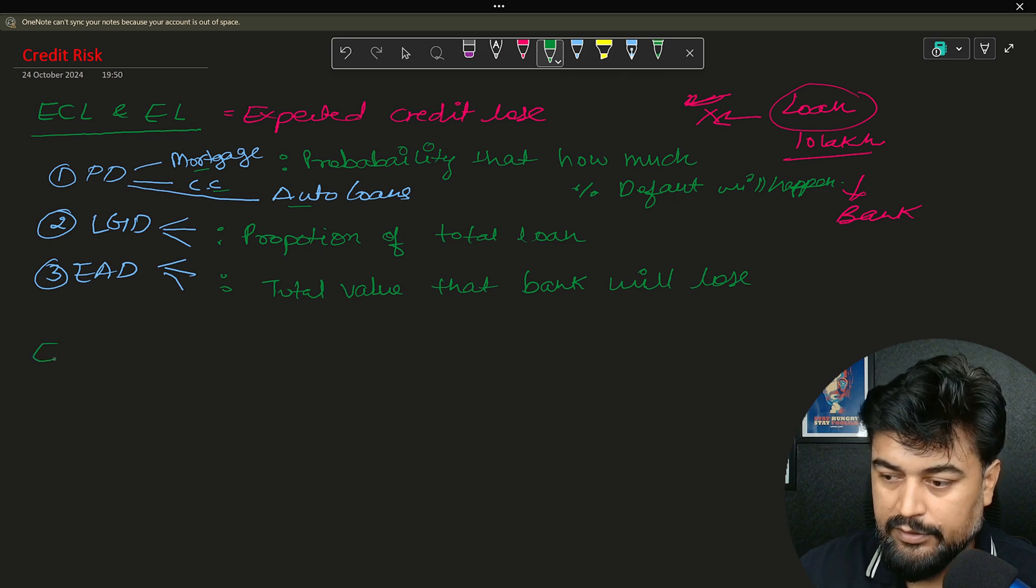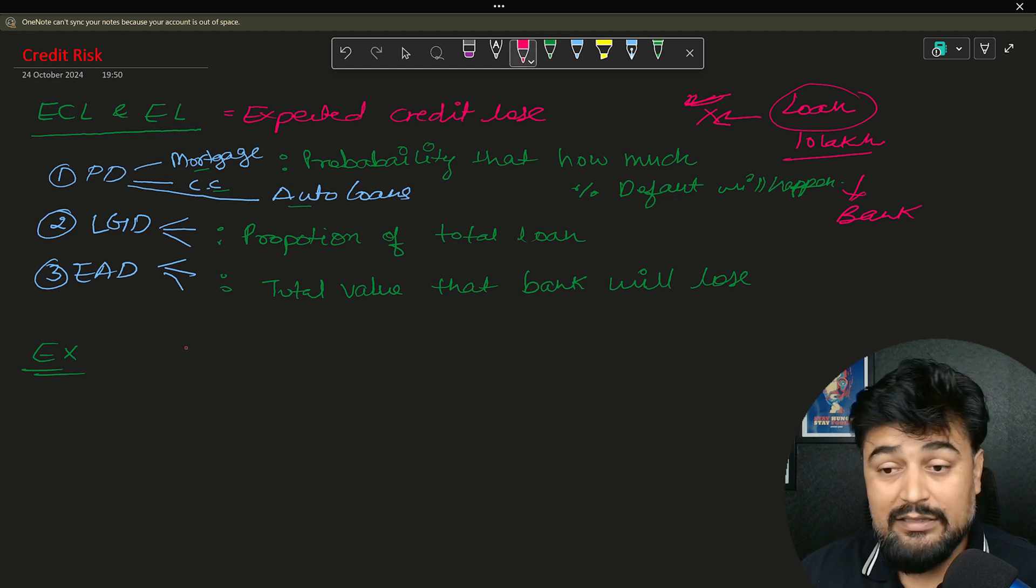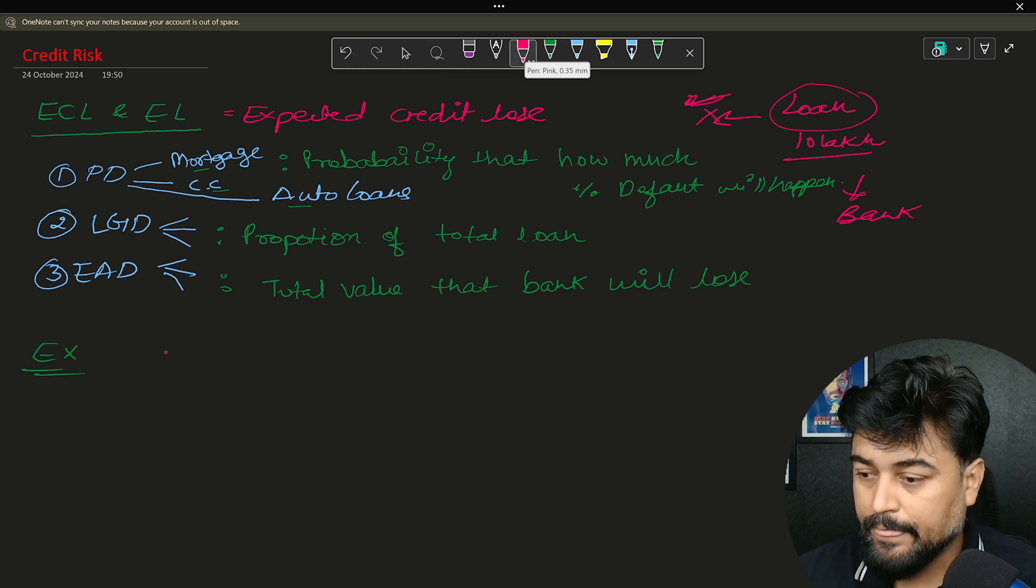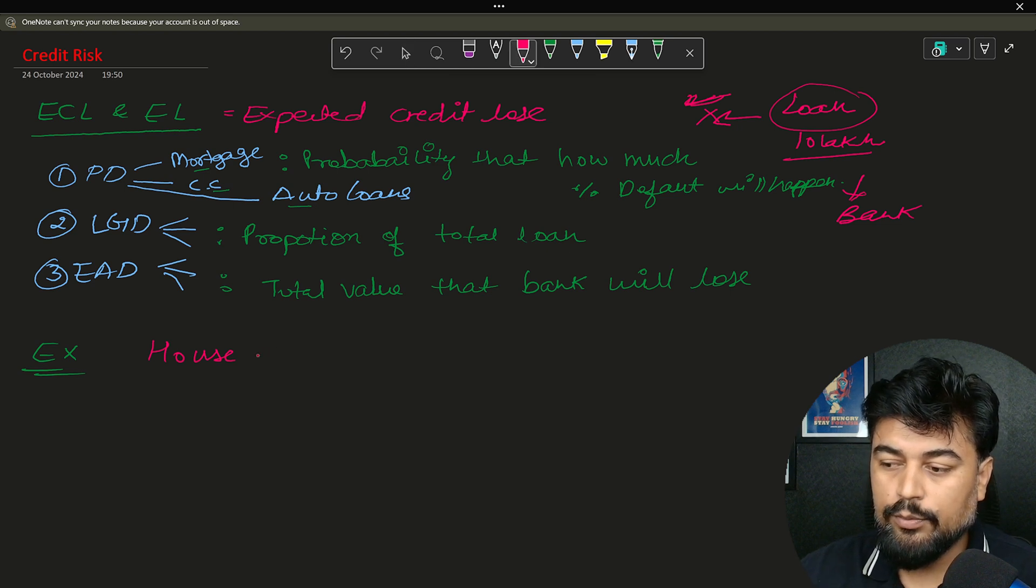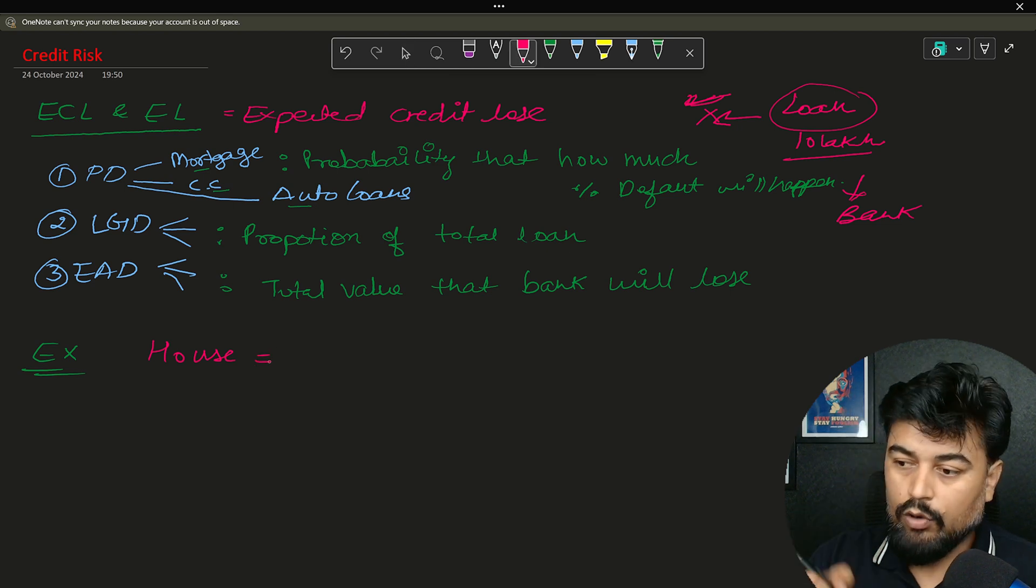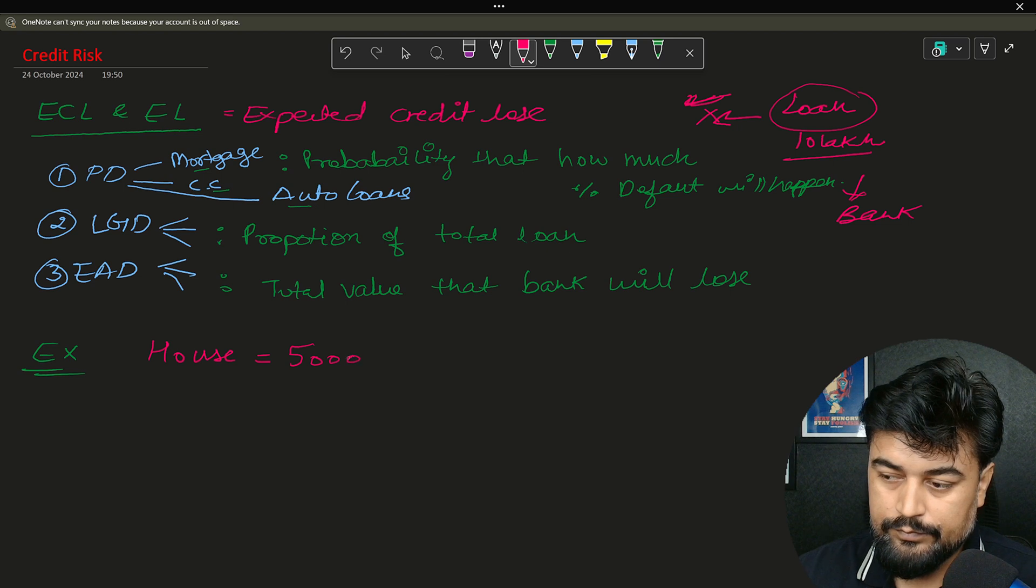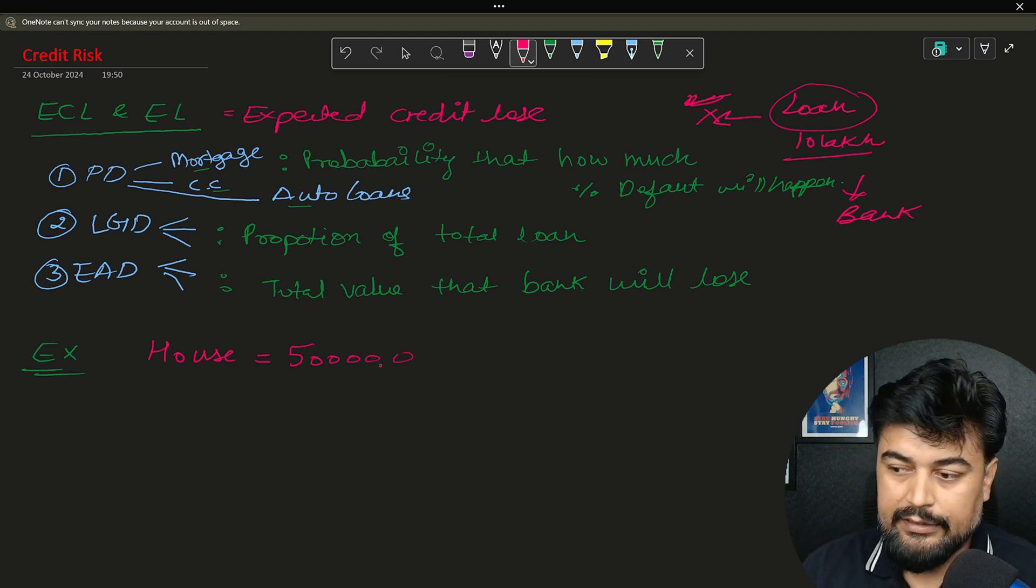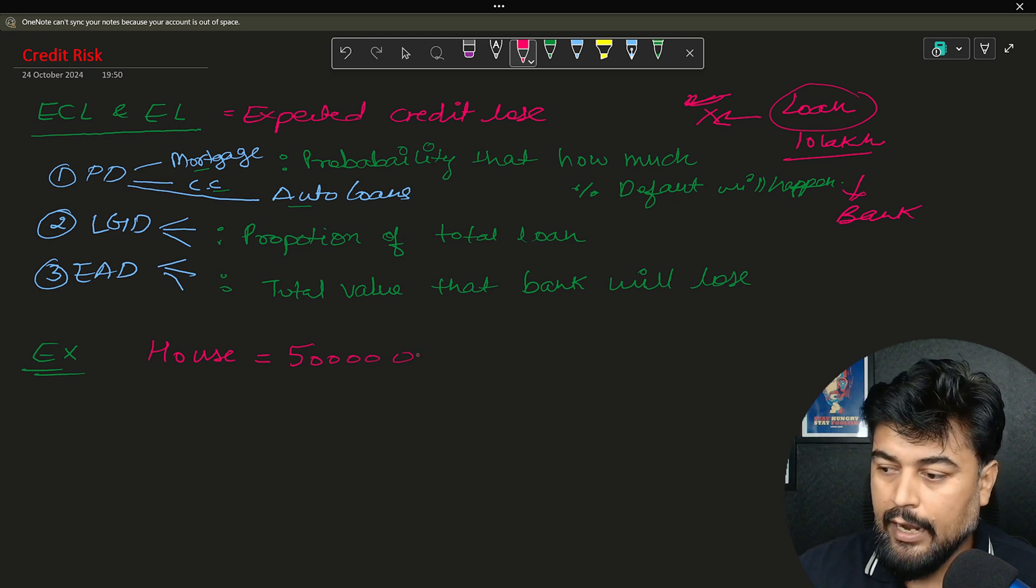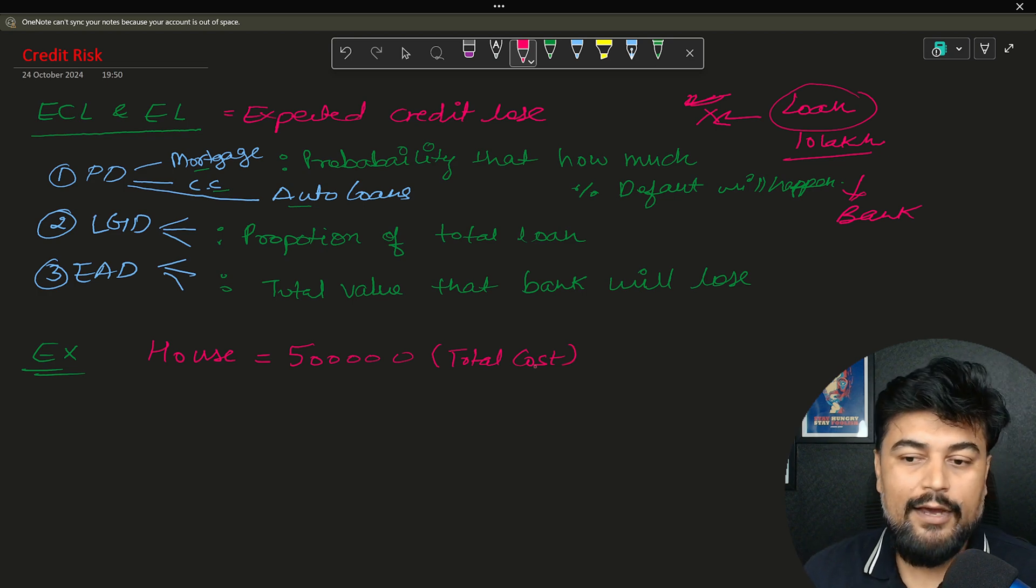Now let me take one example. So with the help of this example, you will be easily able to understand. So let's say a person, the name of the person is Rajat, and he wants to purchase a house. Now for the purchase of the house, he took a loan of let's say 5 lakh. He applied, the house cost is 5 lakh. This is the total cost of the house.